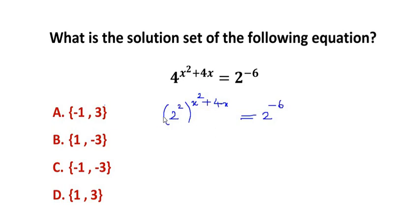Now using laws of indices, the powers will get multiplied. So we have 2 to the power of 2 times x² is 2x², plus 2 times 4x is 8x. So the powers are getting multiplied. This is equal to 2 to the power of negative 6.